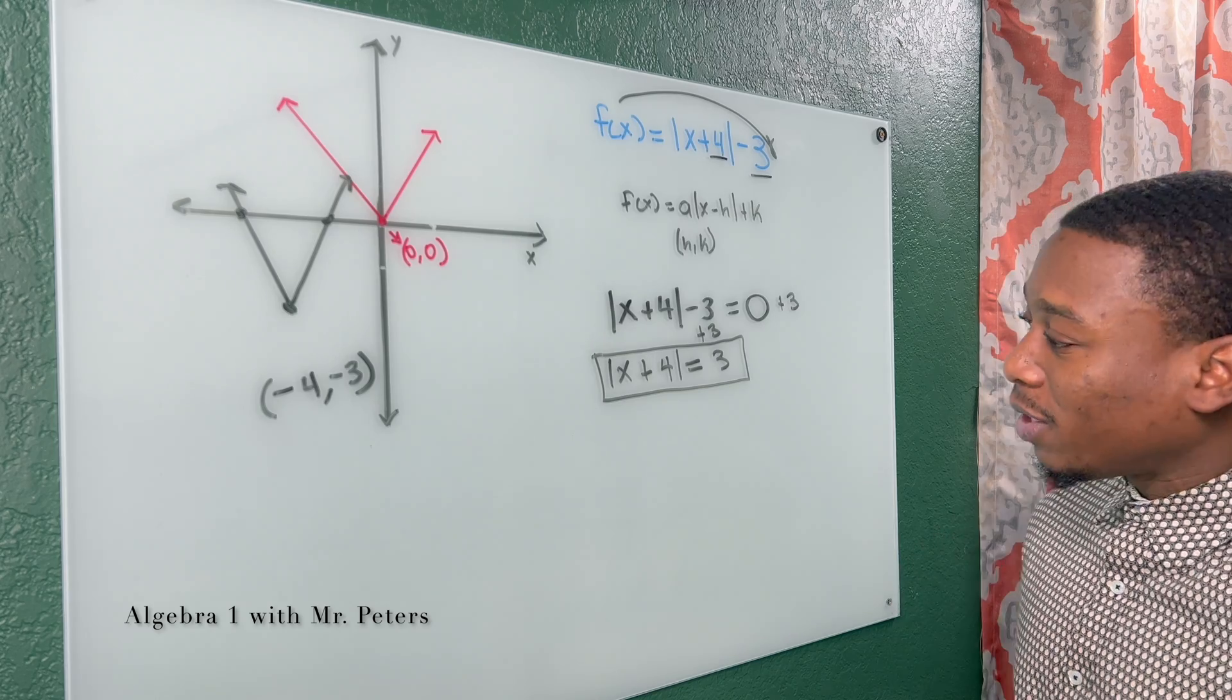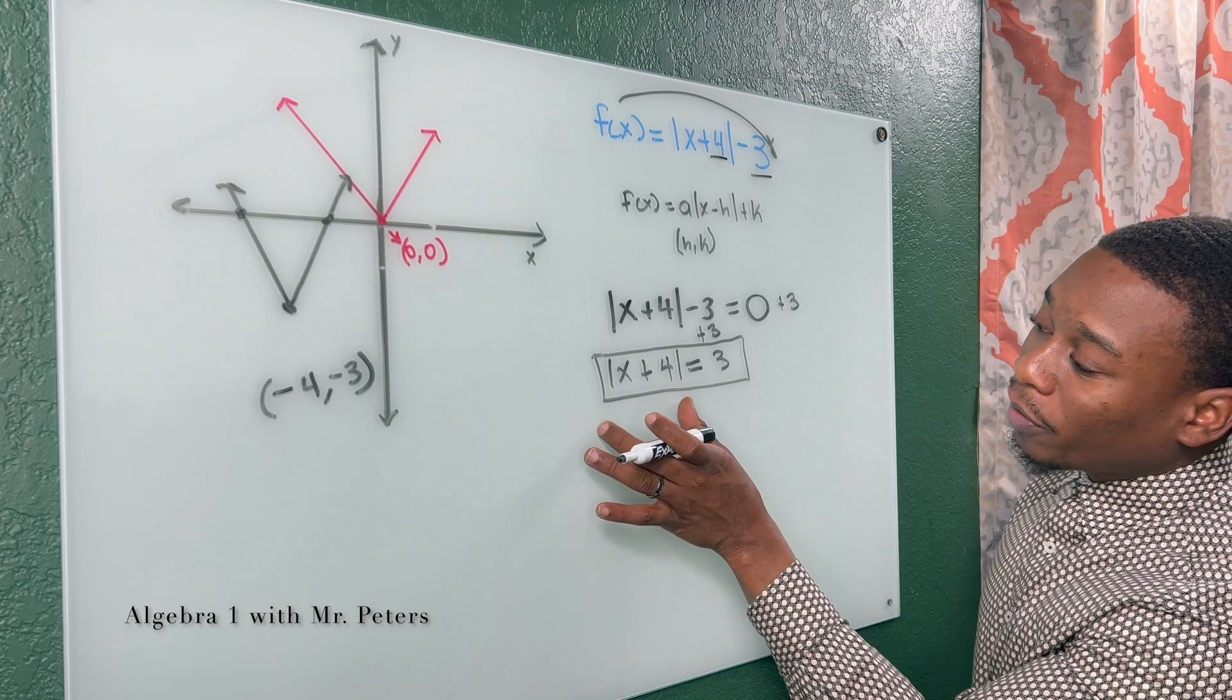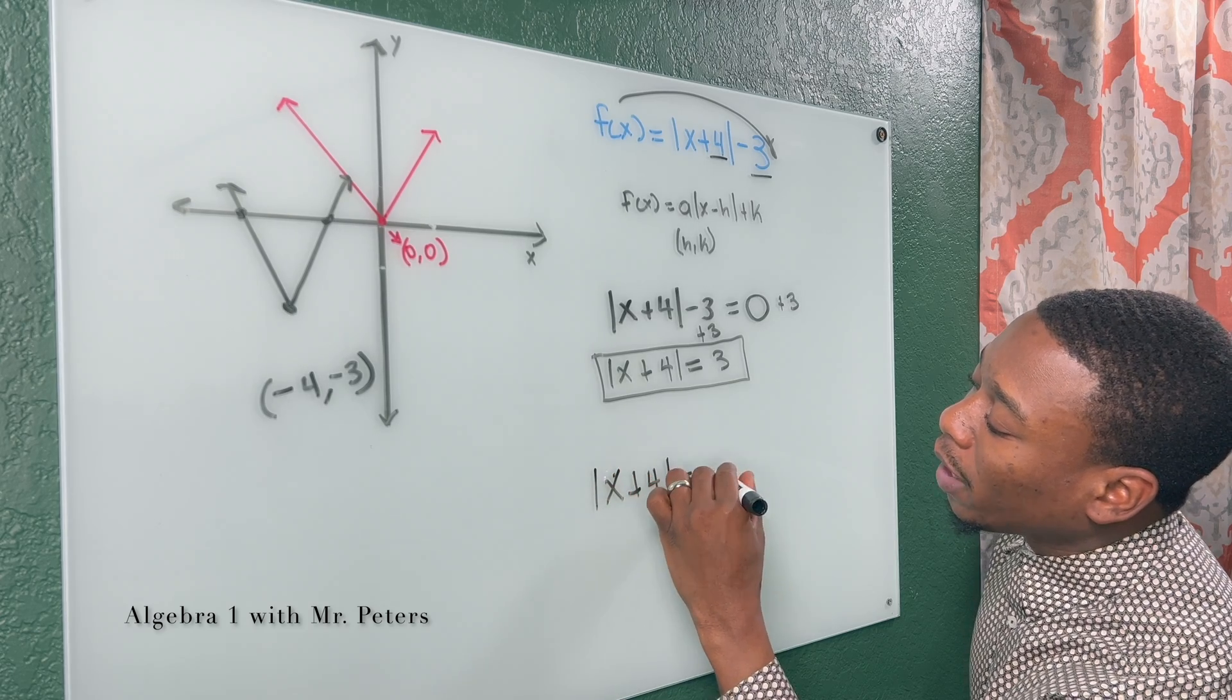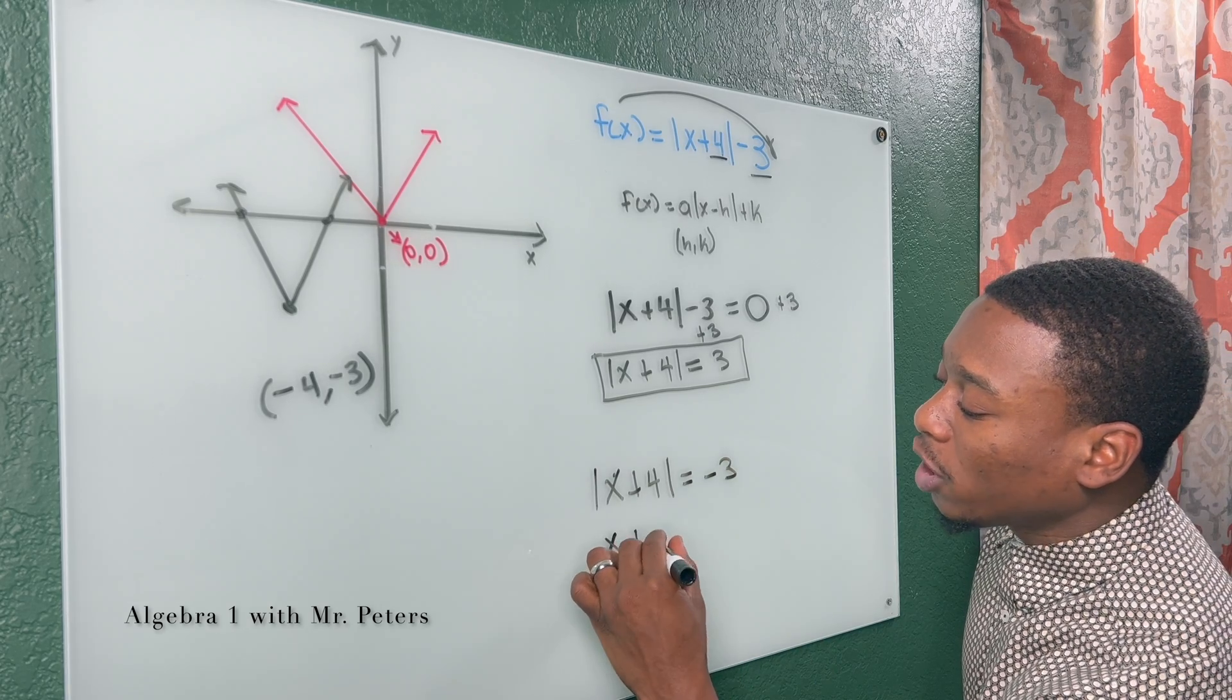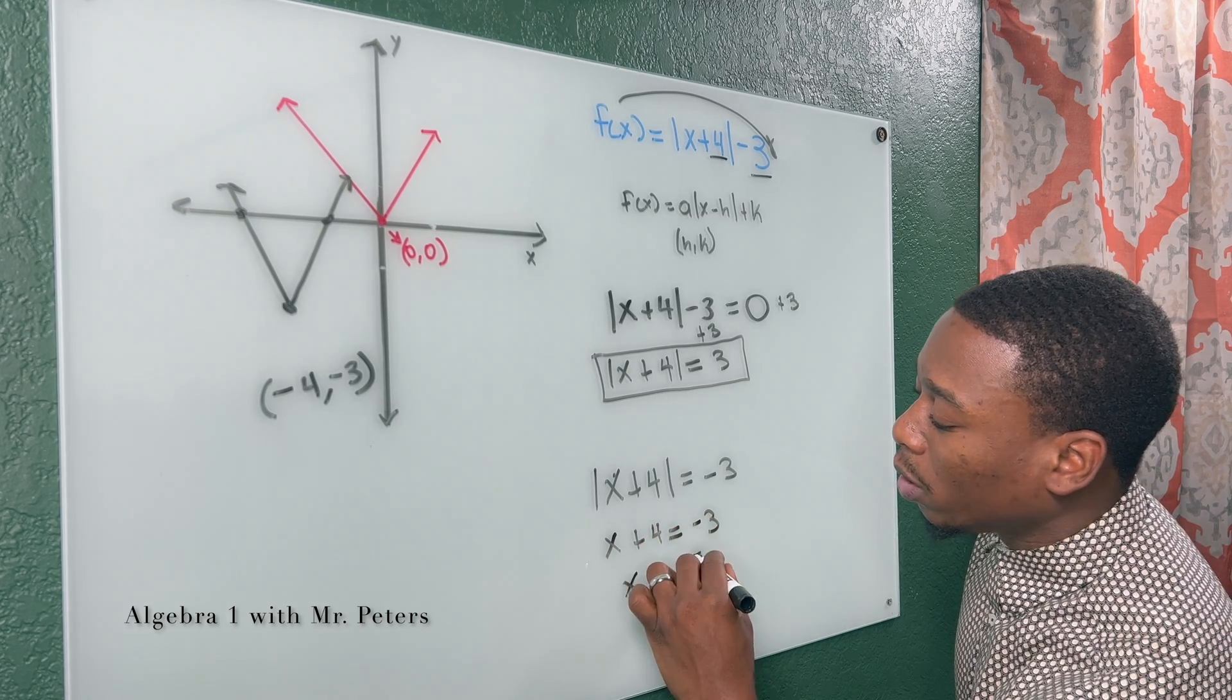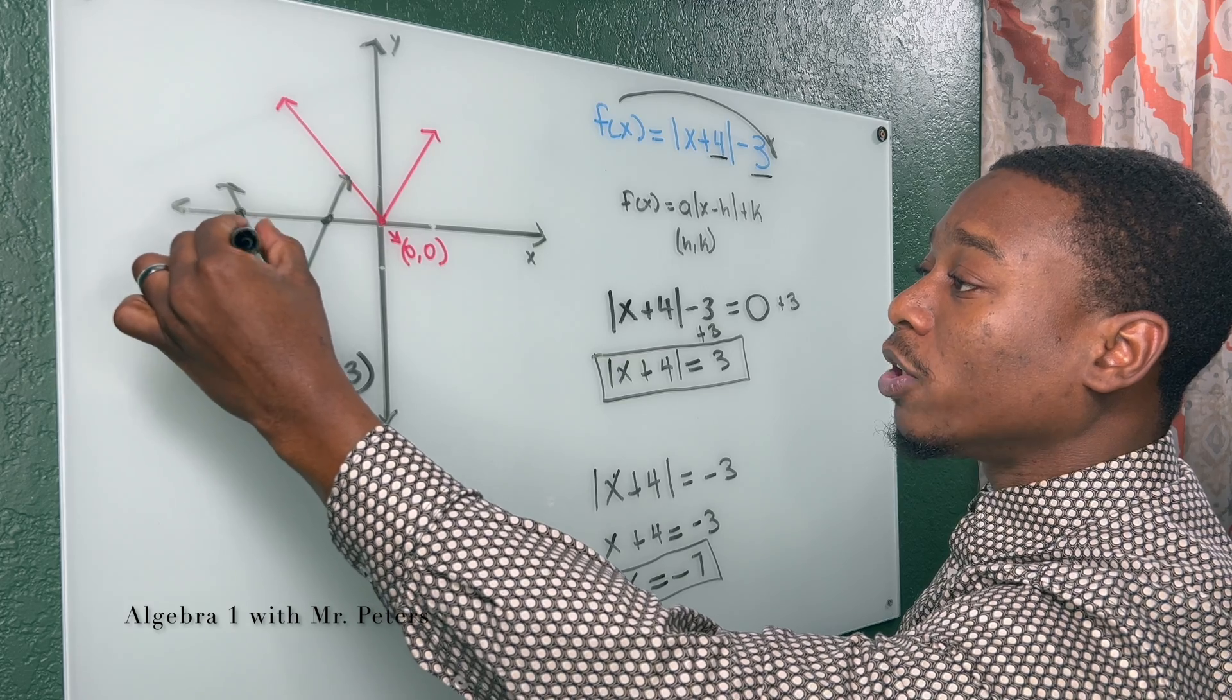Now that we have this equation, we can now split it into two different problems. We have the absolute value of x plus four is equal to three, and we have the absolute value of x plus four is equal to negative three. So when I drop my brackets, all I'm going to have is x plus four is equal to negative three. I'm going to get x is equal to negative seven. So I know this further point is going to be negative seven comma zero.